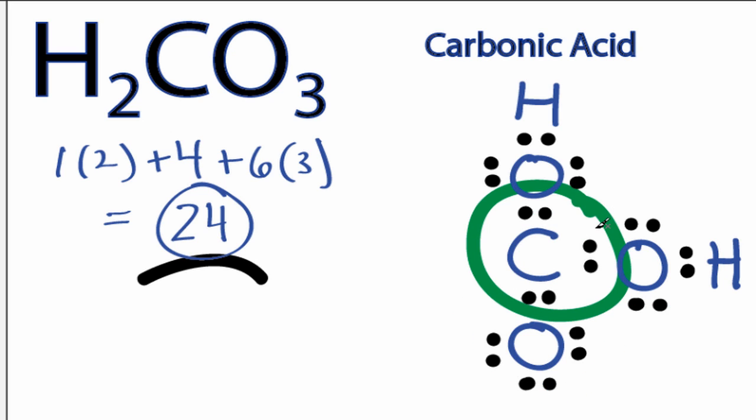However, the carbon only has six valence electrons, so it needs two more to form an octet. What we can do is take two valence electrons from this oxygen and move them to the center and share them in a double bond.